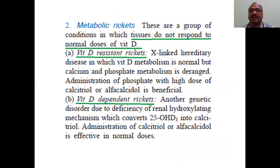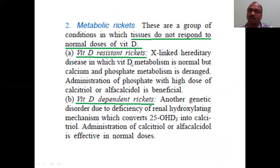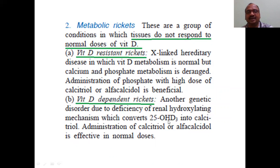Number two is metabolic rickets. In some cases, tissues do not respond to normal doses of vitamin D — this is called vitamin D resistant rickets. Even though you are giving vitamin D regularly, your tissue will not respond. In such cases, you have to give high doses of vitamin D. There is also vitamin D dependent rickets, which has two types.